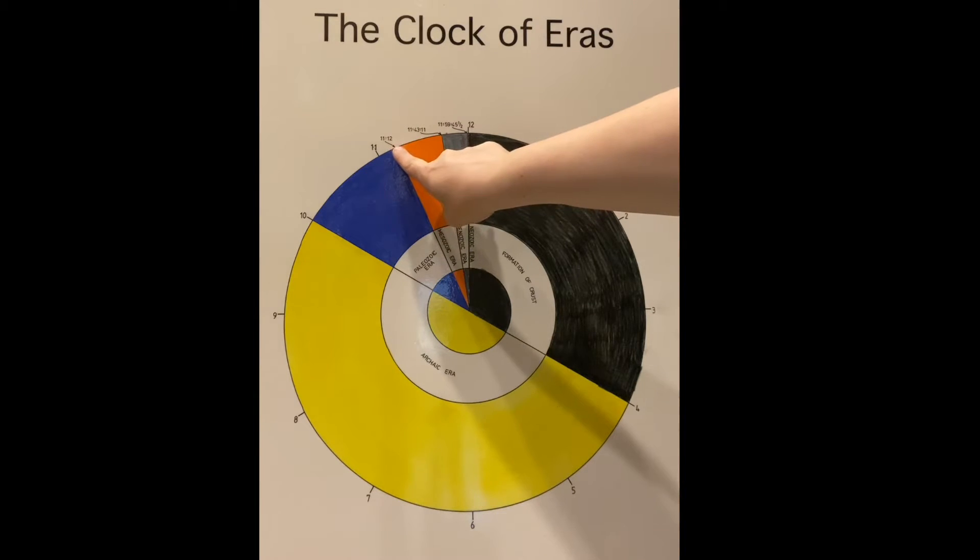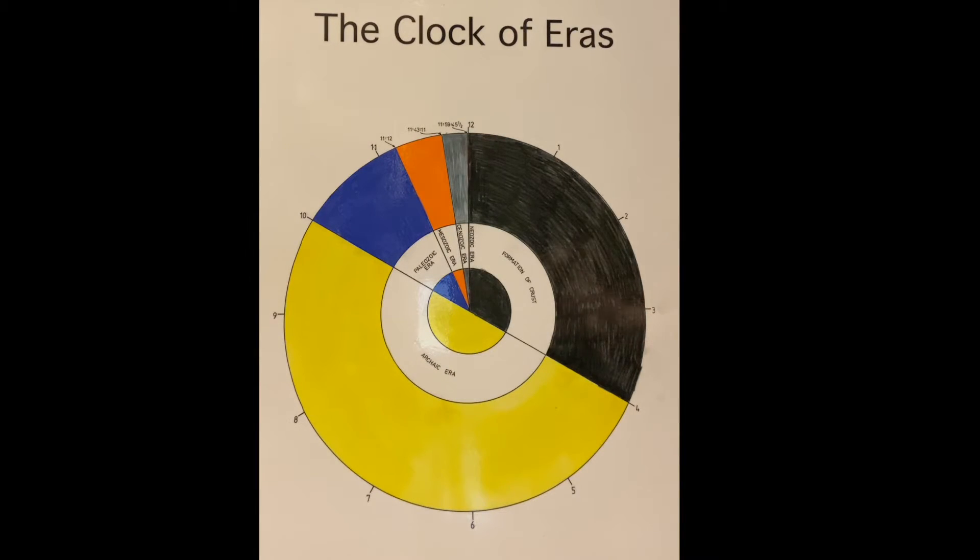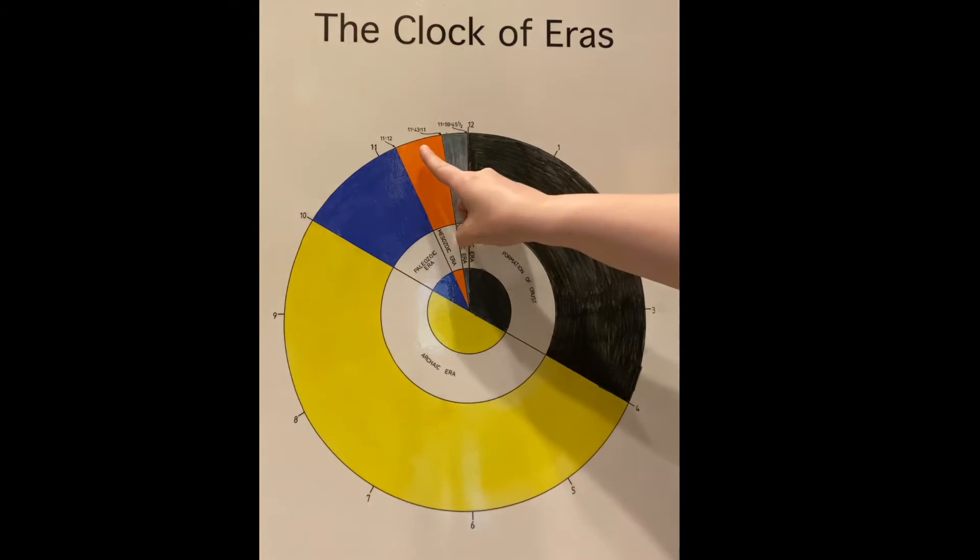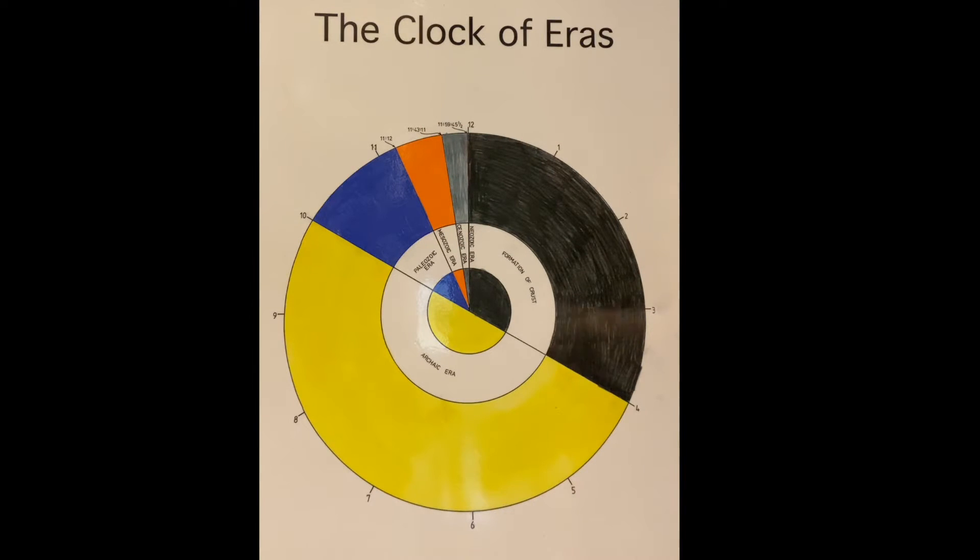The Paleozoic era lasted from 10 o'clock to 11:12. So one hour and 12 minutes of our 12-hour day. So this is the third longest isn't it. Archaic era, formation of crust, and then Paleozoic era. Well the Mesozoic era, the orange era, starts at 11:12 and it goes until 11:43 and 11 seconds. So that is only 31 minutes and 49 seconds is how long this lasted. This didn't even last an hour did it. So the Mesozoic era, there's a story in this word too. So meso means middle and zoic in this word refers to animals. So you can think of it as the time of middle animal life. So this was the time that the reptiles and amphibians lived as well as the dinosaurs. That is the Mesozoic era.